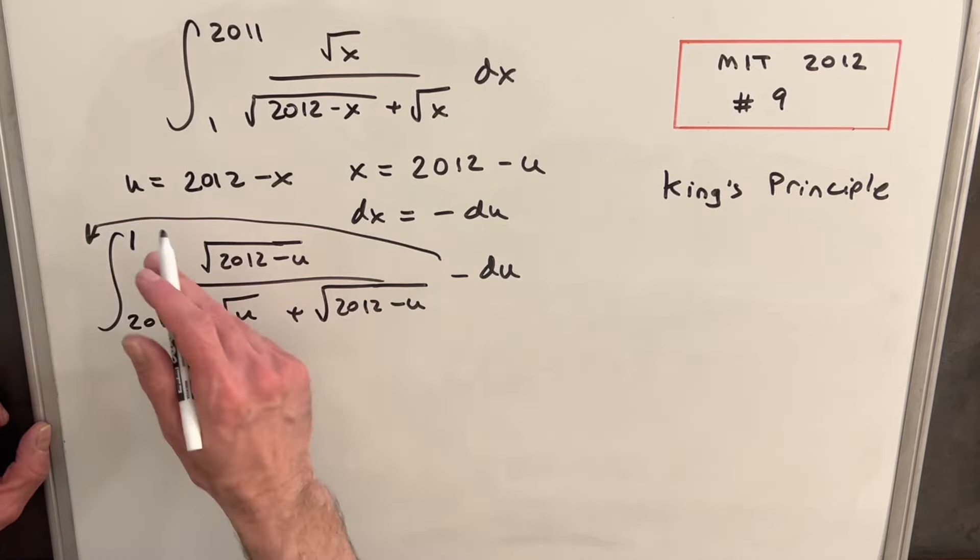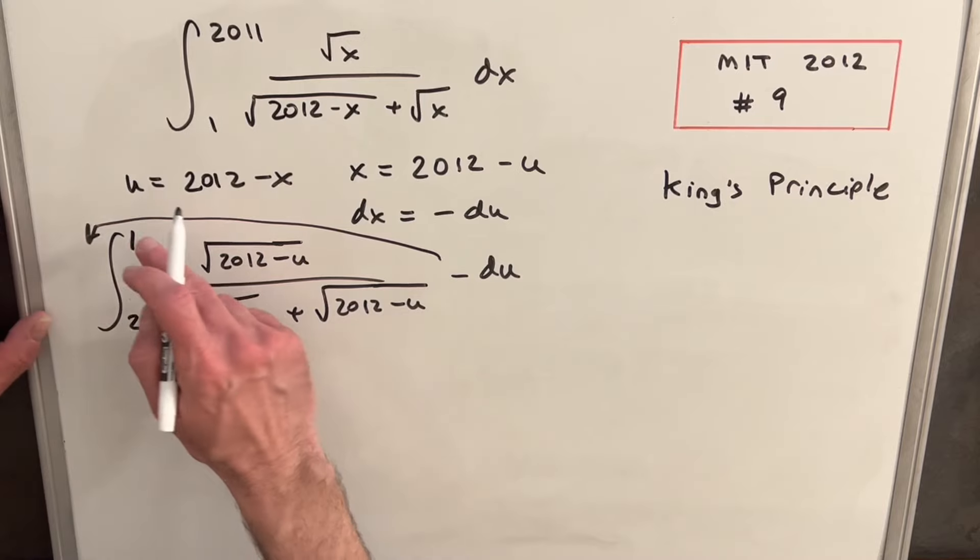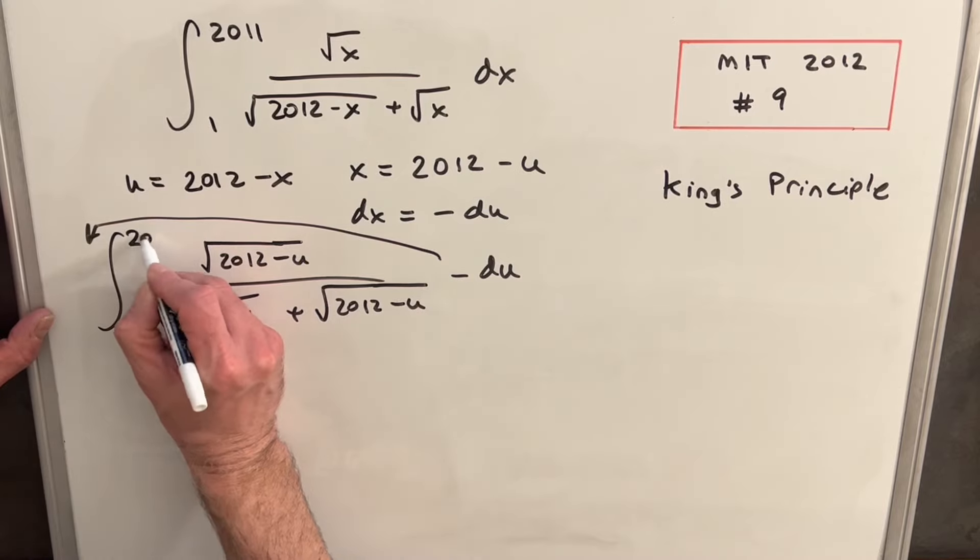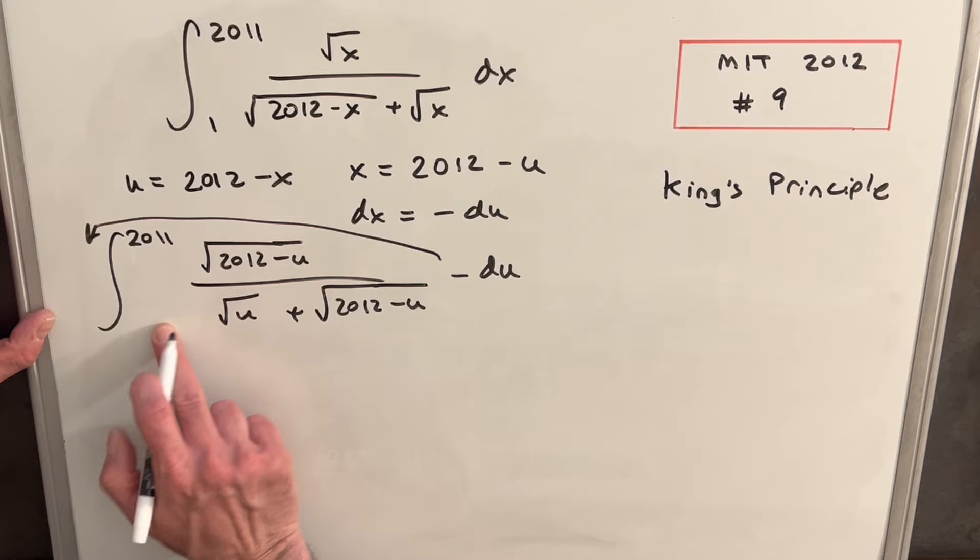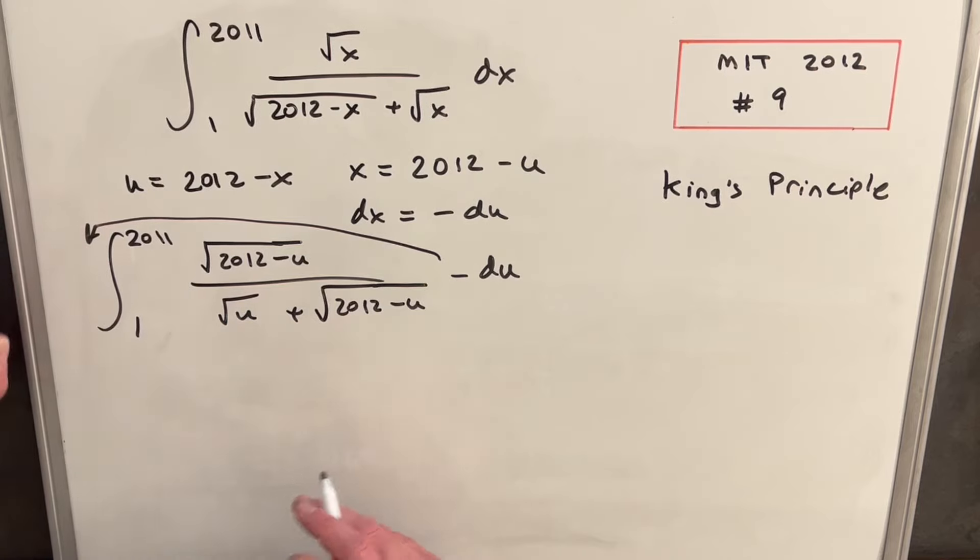We can use this to flip the bounds. So what I can do is just, let's rewrite this. We'll flip this as 2011 to 1, getting it back with the greater value on top. We'll change that to a plus. Then for our next step, what we're going to want to do is...